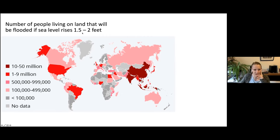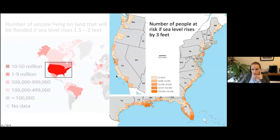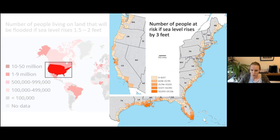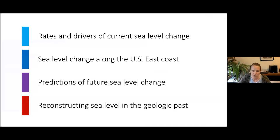This is not a huge amount of rise — one and a half to two feet. If we zoom into the US, here's a slightly different scenario: the number of people at risk if sea level rises by three feet. Everywhere along the coastline, especially areas with very flat topography like Florida and New Orleans, Louisiana, will be affected. What my work and the work of many others aims to do is better understand why sea level is changing, how much it is changing, and how it will change in the future.